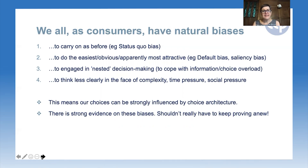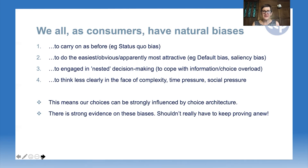A fourth bias is that we tend to think even less clearly in the face of complexity, time pressure — which can make consumers make less good decisions — and also social pressure. We want to be part of a community and do what our peers suggest is a good thing. All of this means that our choices as consumers can be really strongly influenced by the choice architecture we face, the way in which decisions are presented to us. There's really strong evidence on these biases, so theoretically we shouldn't have to keep proving them anew in every case. However, thinking about the demand side in this way is sufficiently new in antitrust that we probably are going to have to keep proving them in every case.